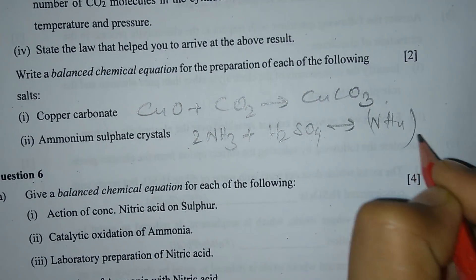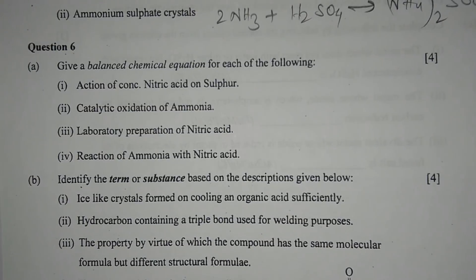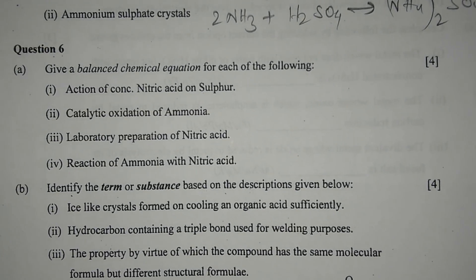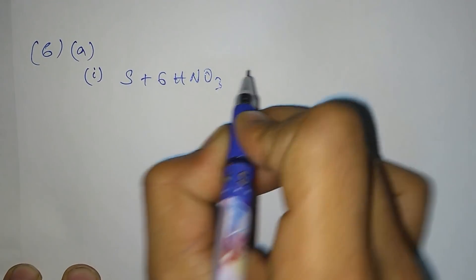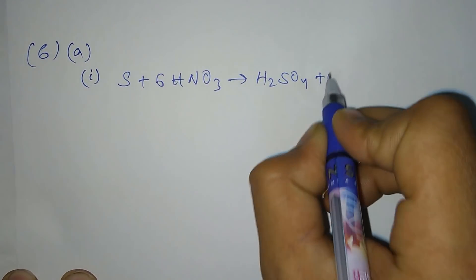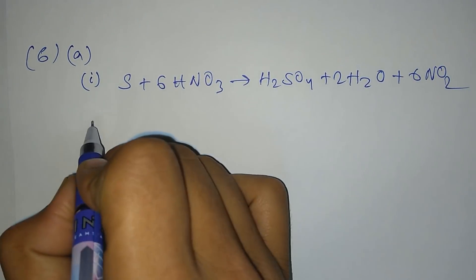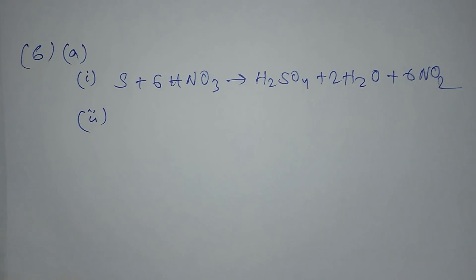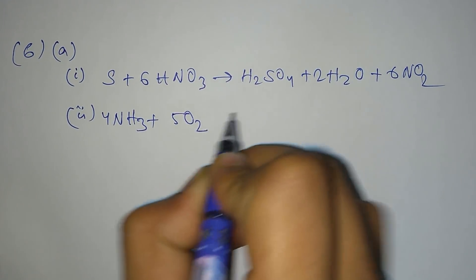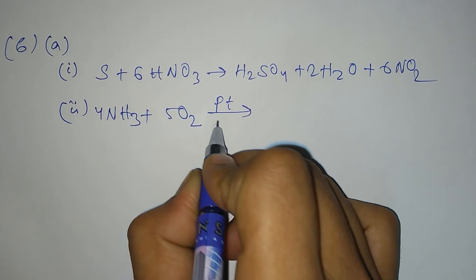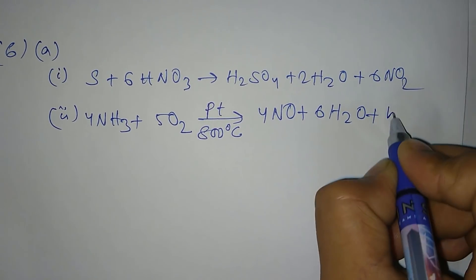Question 6a: give a balanced chemical equation for each of the following. Number 1 — action of concentrated nitric acid on sulfur: S + 6HNO3 → H2SO4 + 2H2O + 6NO2. Number 2 — catalytic oxidation of ammonia: 4NH3 + 5O2, in the presence of platinum catalyst at 800°C, gives 4NO + 6H2O and heat.